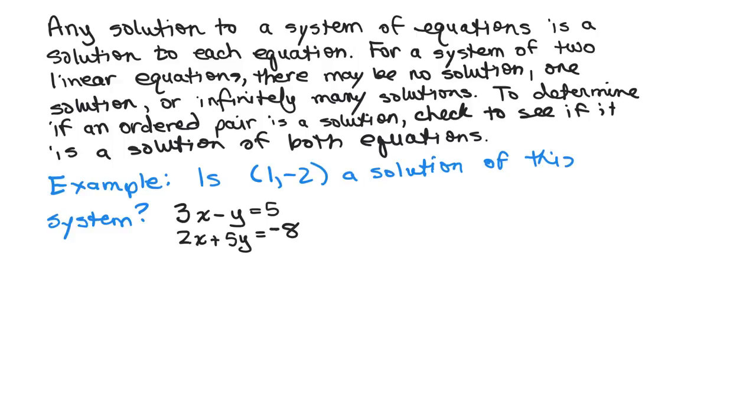Let's try this example. Is (1,-2) a solution of this system? 3x - y = 5 and 2x + 5y = -8.